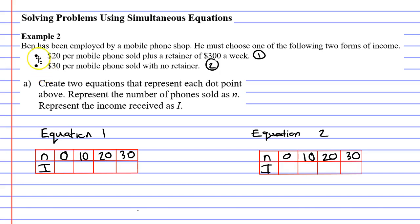So looking at dot point 1, if Ben sells 0 mobile phones, meaning he doesn't get any money for mobile phones, but he does get a $300 a week retainer, so he'll get $300 for his income in this instance. Let's try the second column. He makes $20 per mobile phone sold. If he sells 10 of them, that's $200. Plus the $300 makes $500.